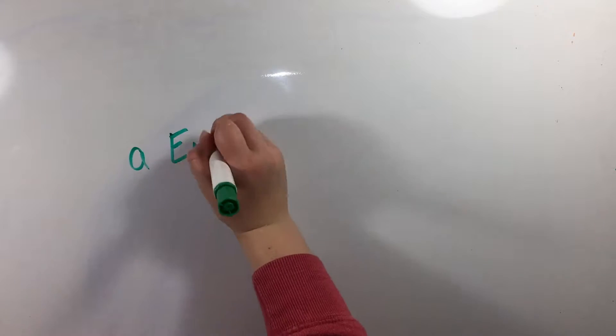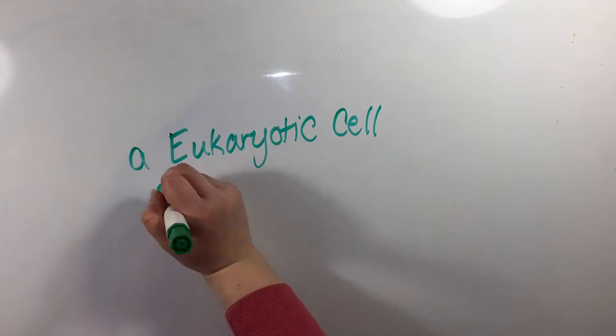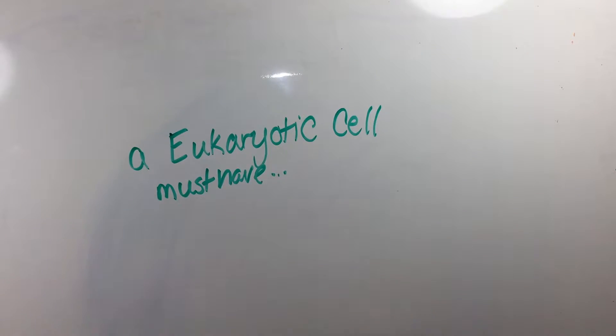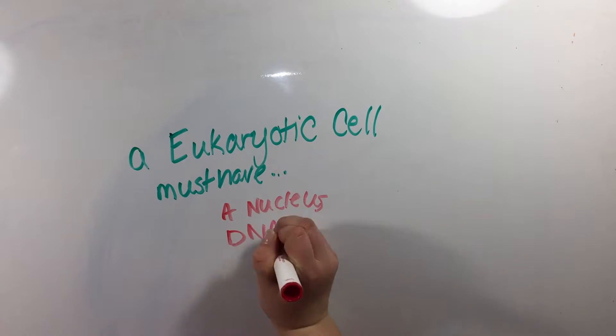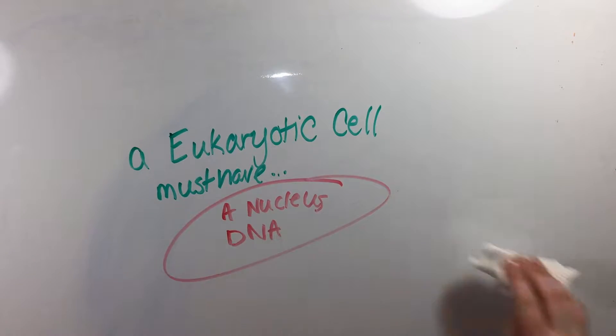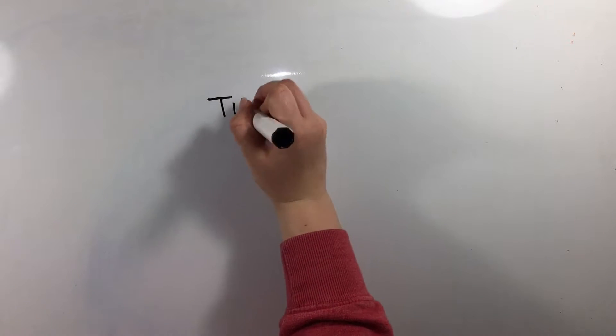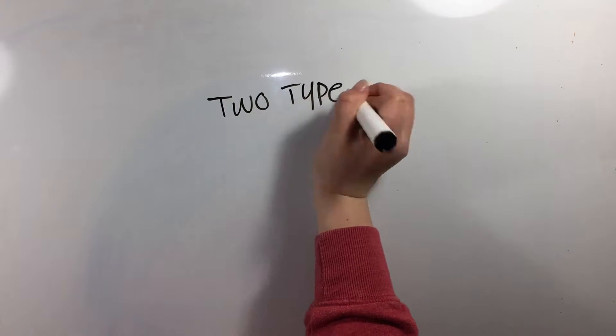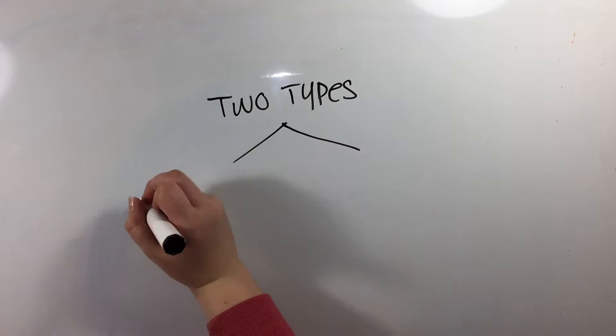In contrast to a prokaryotic cell, a eukaryotic cell must have a nucleus and DNA. Two types of eukaryotic cells are plant cells and animal cells.